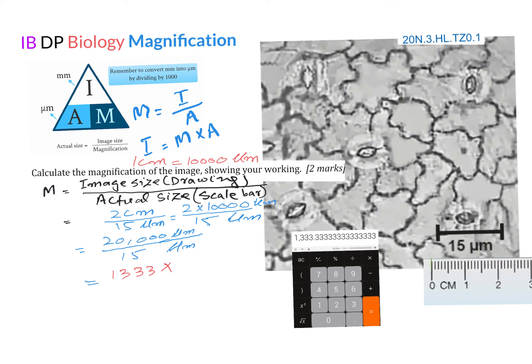the actual size, which is the scale bar or may be given in the question. So it's two centimeters divided by 15 micrometers. In this case, generally we make the mistake of just doing the calculation here.